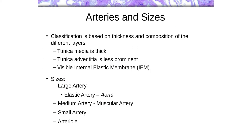When looking at arteries, we can try to figure out their sizes based on what we see under the light microscope. We can subdivide them into large, medium, and small arteries, and also arterioles. That classification is based really on how many layers of smooth muscle we see in the tunica media. Diameter is also important, but it's unlikely you'll be able to figure out the diameter based on what you're looking at under the microscope, so usually we tend to look for just the number of smooth muscle layers.